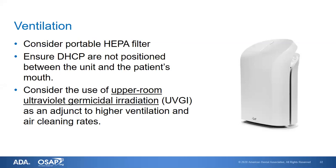One of the other new recommendations is considering the use of what's called upper-room ultraviolet germicidal irradiation, or UVGI. This involves ultraviolet lights installed in the upper part of the room near the ventilation, because UV at a certain range will inactivate microorganisms. This would be an adjunct to your existing ventilation system — as air is drawn through that area, it would also inactivate certain numbers of microorganisms.